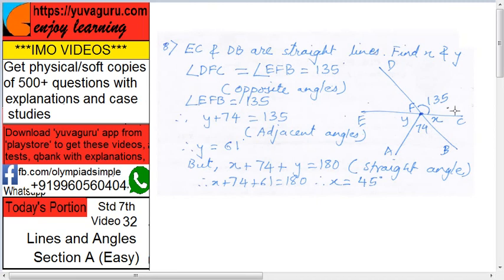EC is a straight line. Once EC is a straight line, then the sum of all the angles on this line will be 180 degrees because it is a straight angle, or you can call it supplementary. So X plus 74 plus Y equals 180. But you know Y is now 61, so X plus 74 plus 61 equals 180. Add them and subtract from 180, you get X equals 45.